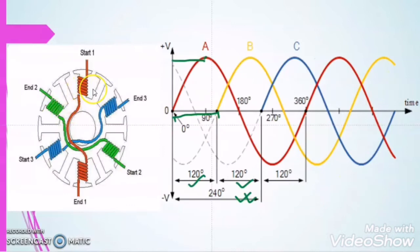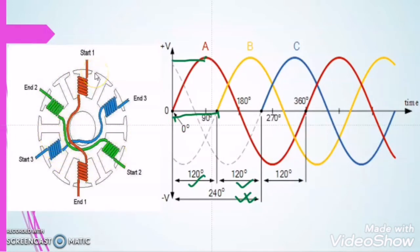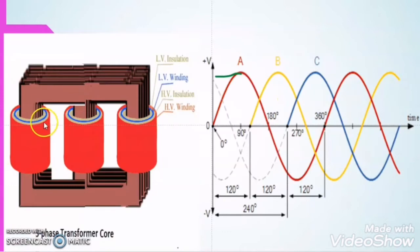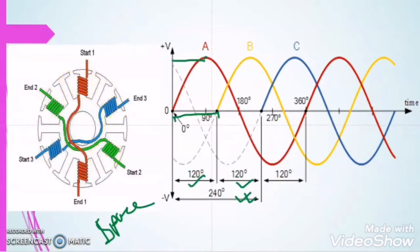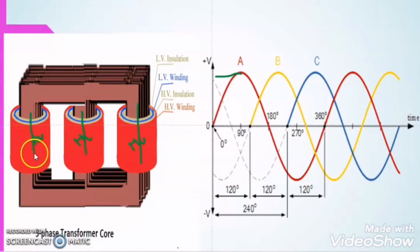The only difference between the three phase induction motor and the three phase transformer is the winding arrangement. In the three phase induction motor, each winding is also physically displaced from the other by 120 degrees — this is called space displacement. But in the case of the transformer, the HV winding, which is equivalent to the stator winding R, Y, B, is not displaced from each other by any angle. All have zero degree displacement — all are concentric.